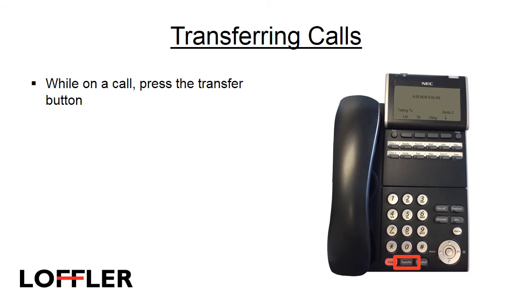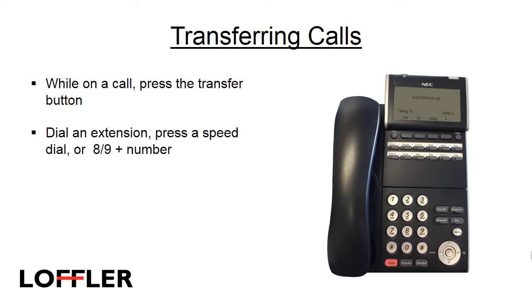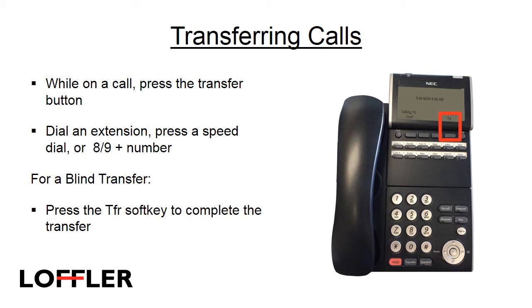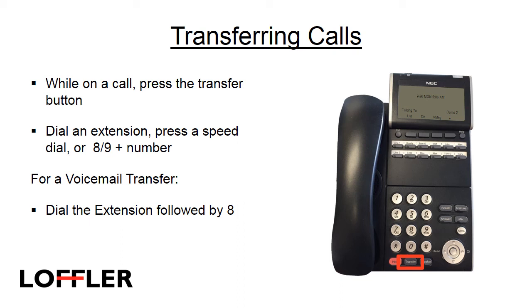To transfer a call from your extension to another number, press the transfer button. Dial an extension, press a speed dial, or dial the trunk access code 8 or 9 and then a number. To do a consult transfer, wait for an answer, announce the call, and then hang up to complete the transfer. To complete a blind transfer, press the transfer soft key to complete the transfer. To complete a voicemail transfer, dial the extension followed by 8.